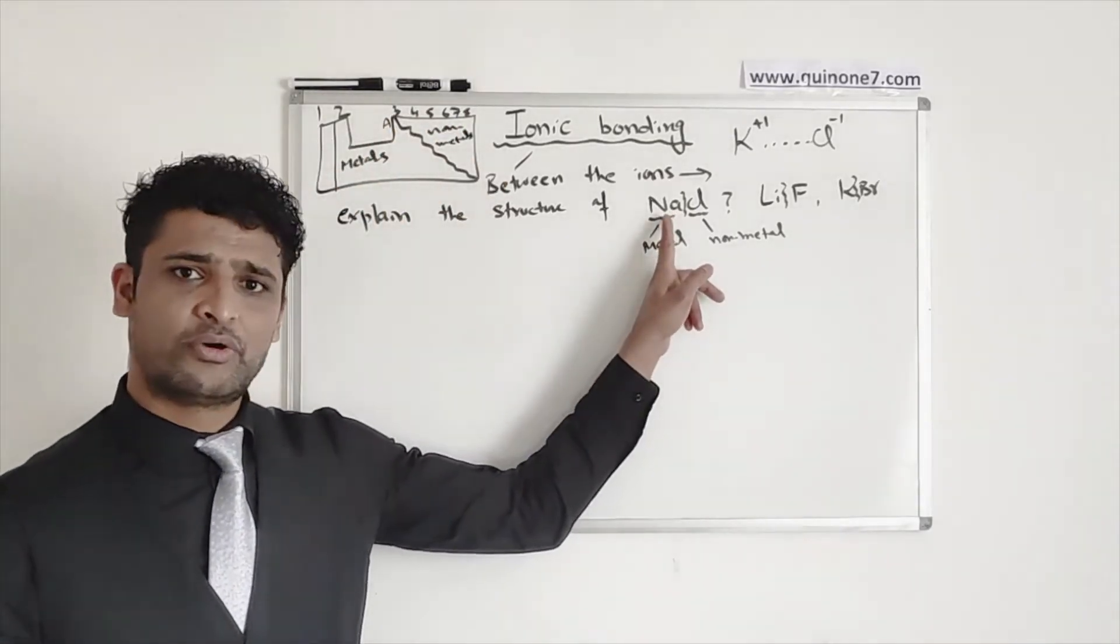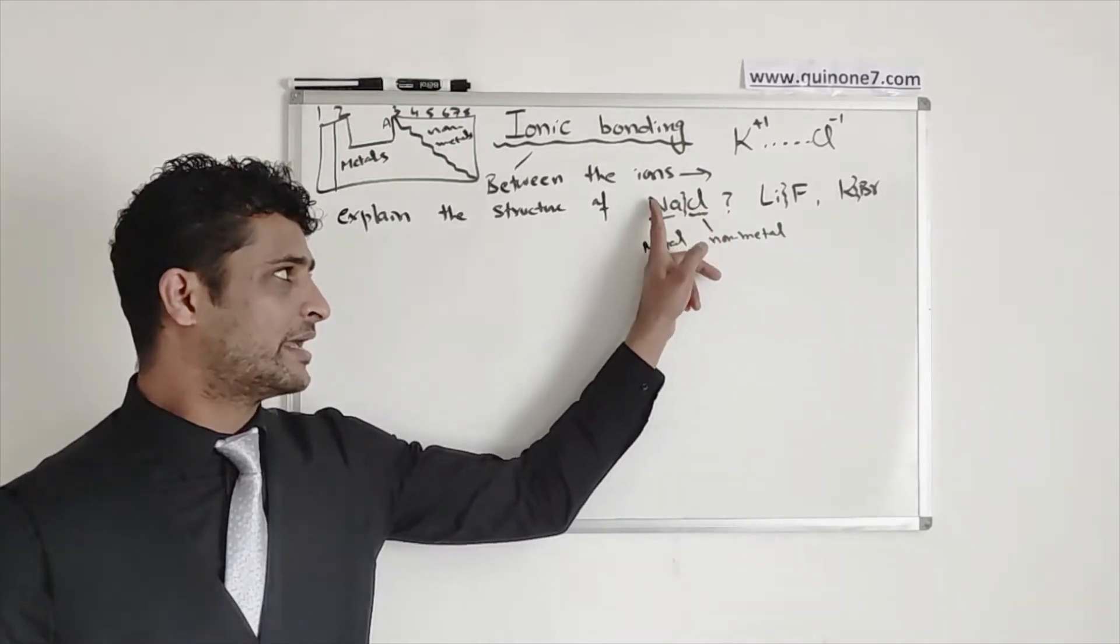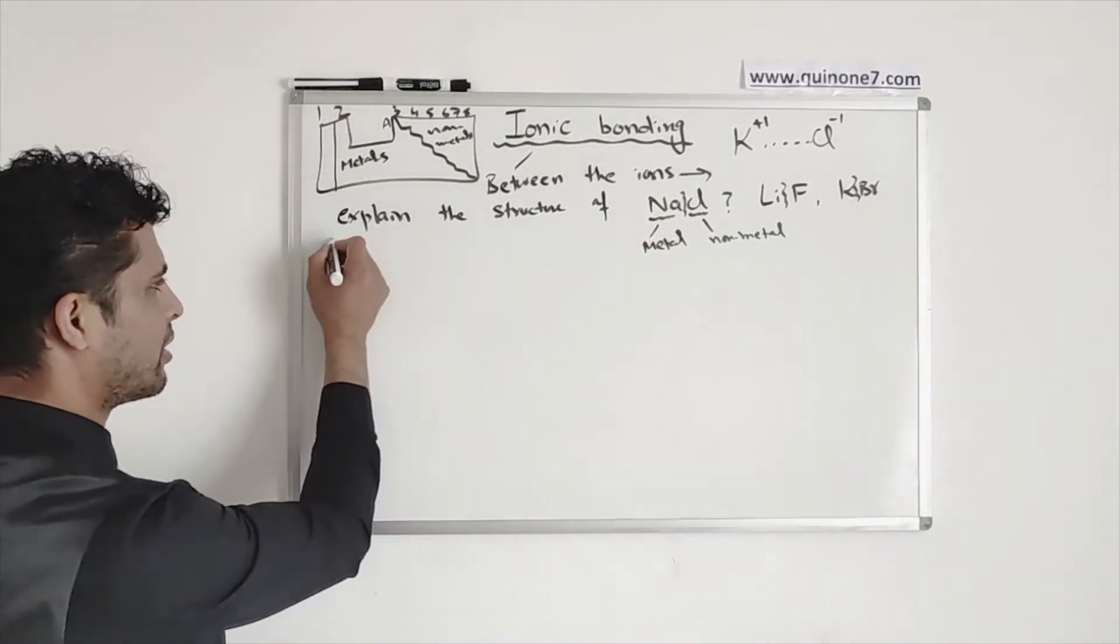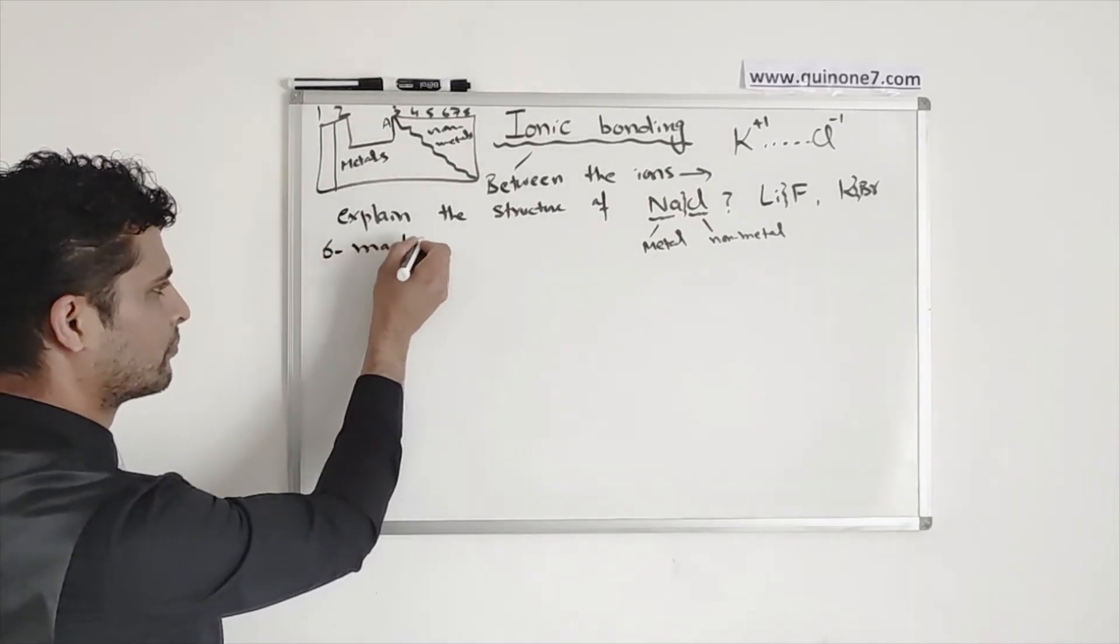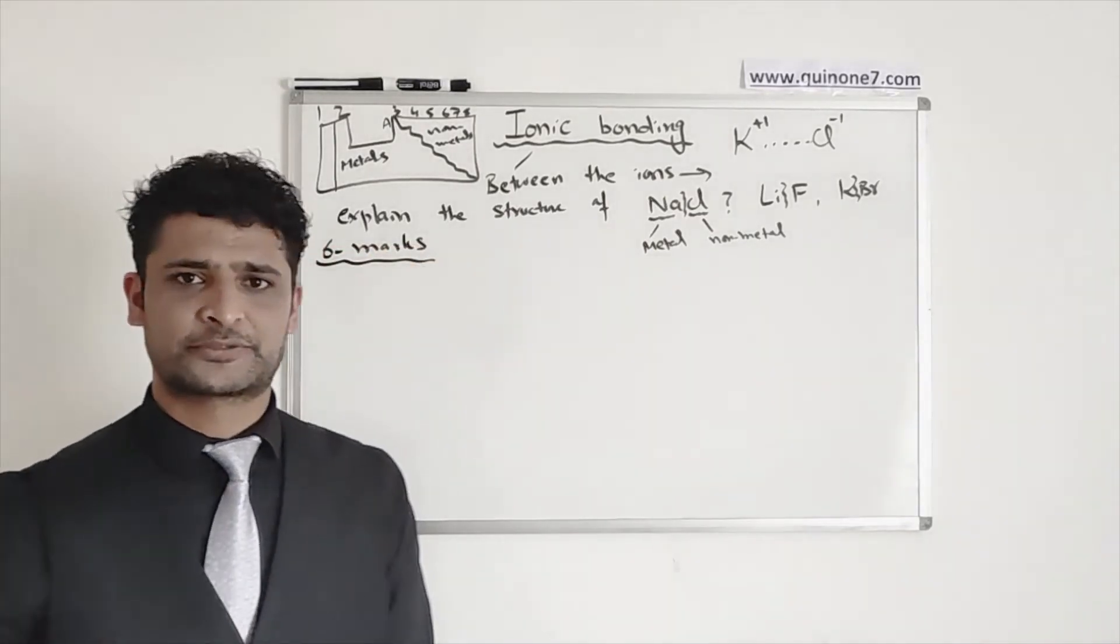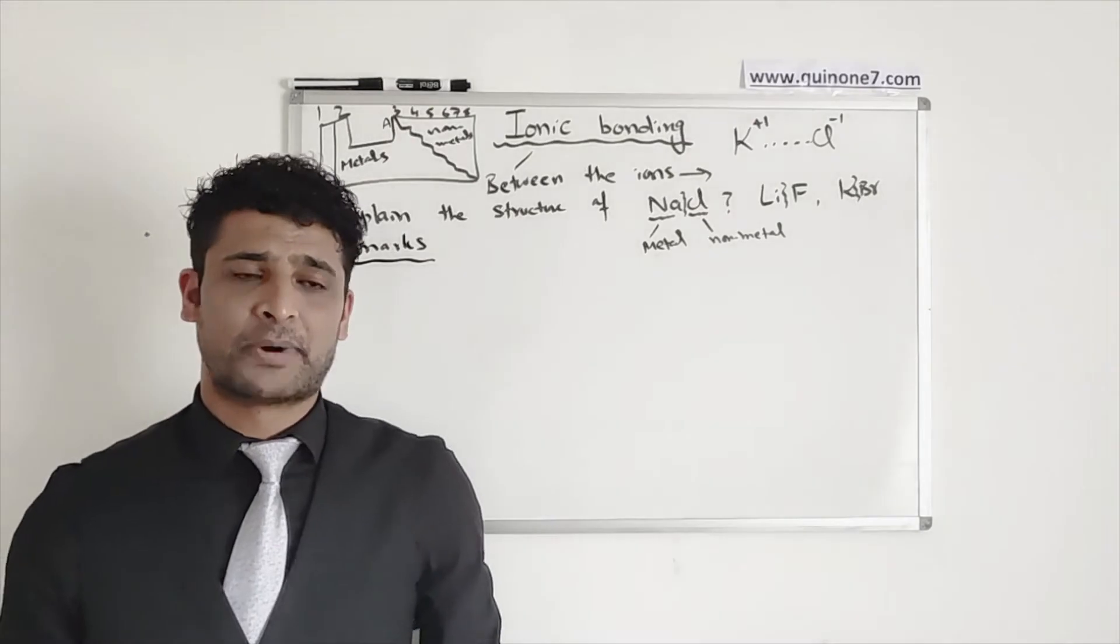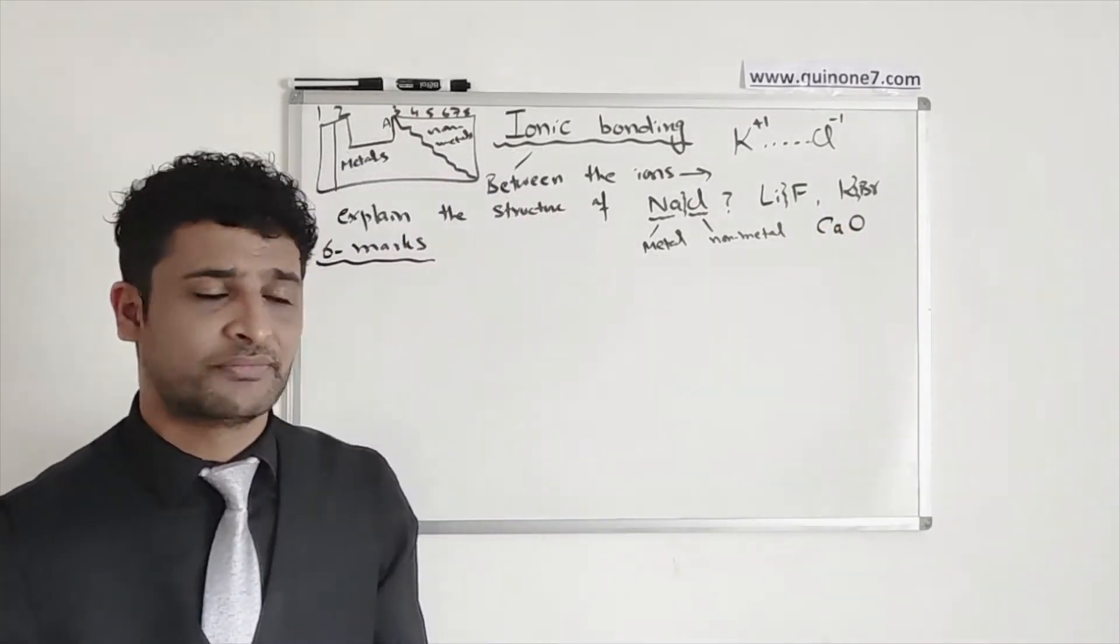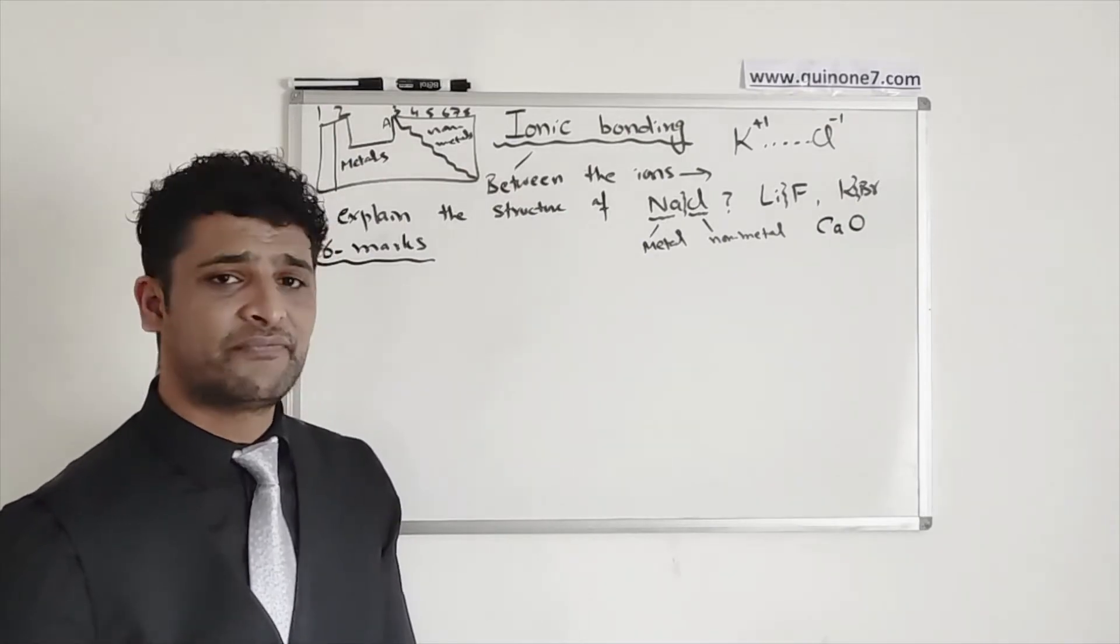So a bond between a metal and a non-metal is called an ionic bond. Now, let's look at the structure. If this gives you a six marker question, explain the structure of any of the ionic compounds. It can be actually calcium oxide as well. It doesn't matter which one they're going to ask you.